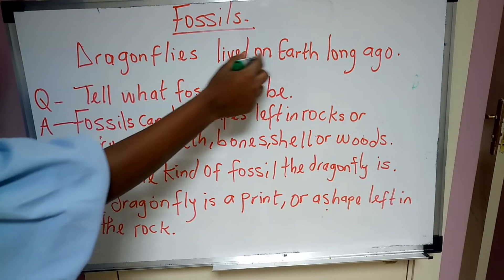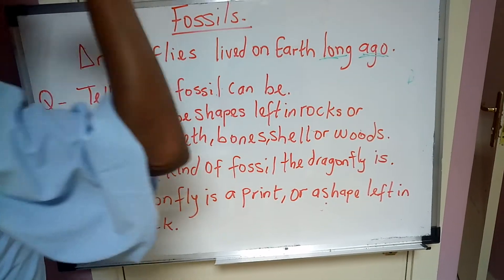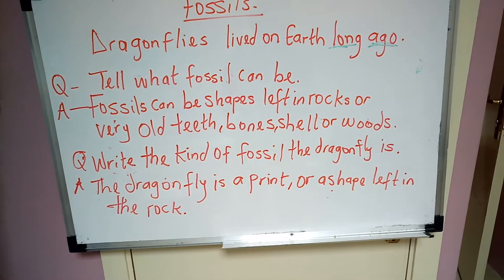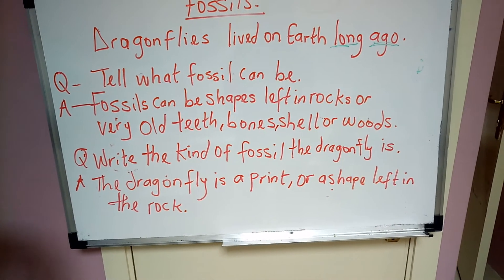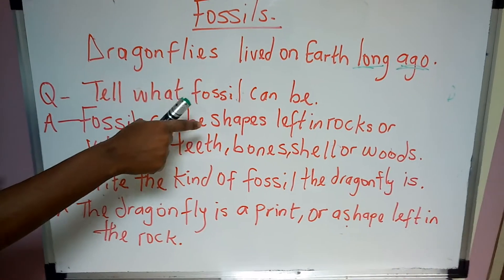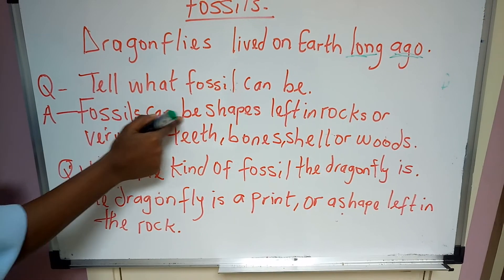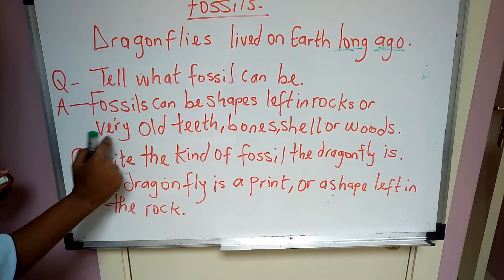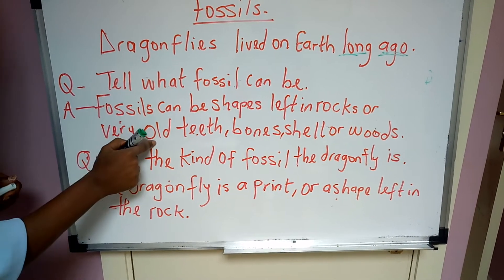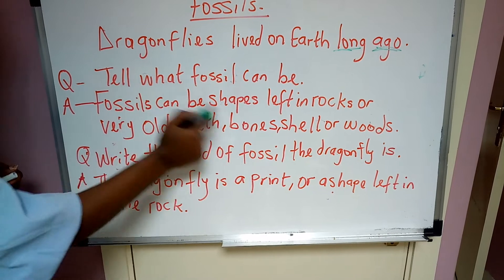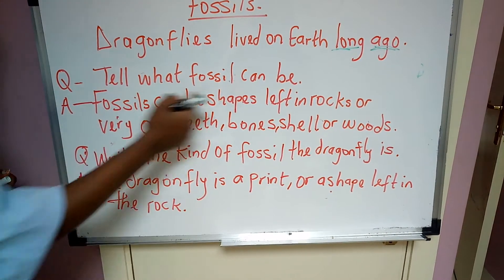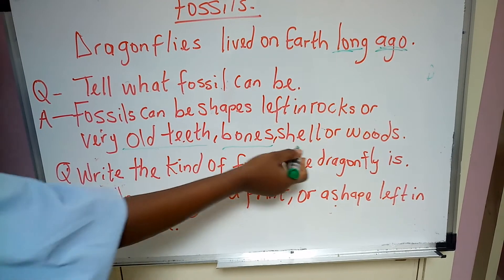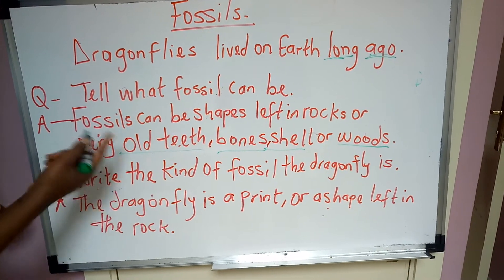Dragonflies lived on earth long ago — in the past, very long ago. Now, I have two questions for you on the board. Tell what fossil can be. Fossil can be shapes left in rocks. Fossil can be very old teeth. Fossil can be bones. Fossil can be shell or wood. Please always remember this, because I will ask you.